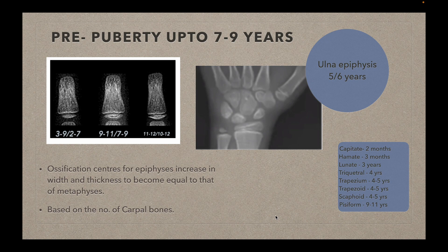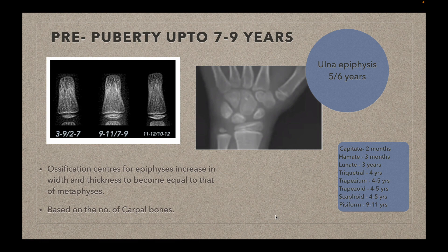The next stage is the pre-pubertal stage, up to seven to nine years. During this stage, the epiphysis continues to grow. The picture shows three different phases: first, the epiphysis is shorter in width compared to the metaphysis; second, it grows to become almost equal in width to the metaphysis; and third, both are equal in width. Following this, capping takes place where spurs appear on both sides as the epiphysis grows and covers the metaphysis. The number of carpal bones visible on x-ray roughly corresponds to the child's age in years. Also, the epiphysis of the ulna appears at five years in females and six years in males.